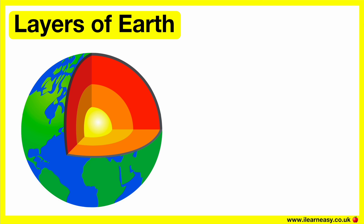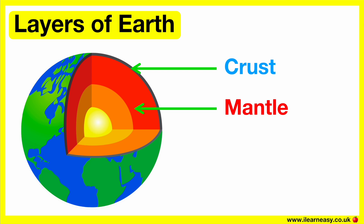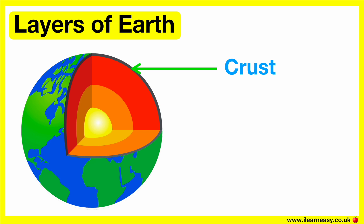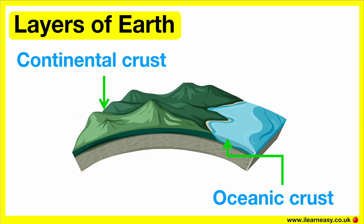The four main layers are: the crust, the mantle, the outer core, and the inner core. The crust is the thin outer layer of the earth, about 15 to 25 kilometers thick. Its thickness ranges depending on whether it's beneath oceans or beneath continents. It's essentially the solid layer that we live on, consisting of rocks, soil, and everything else we can see on the earth's surface.